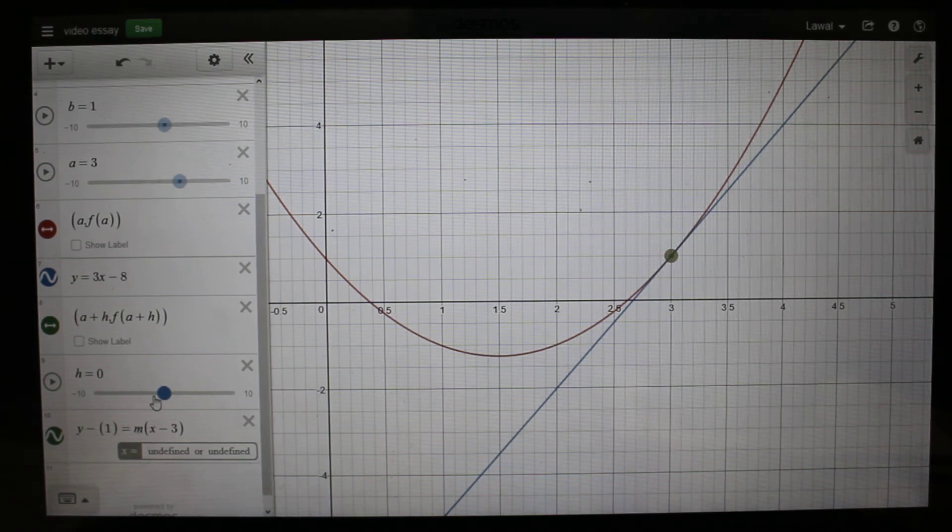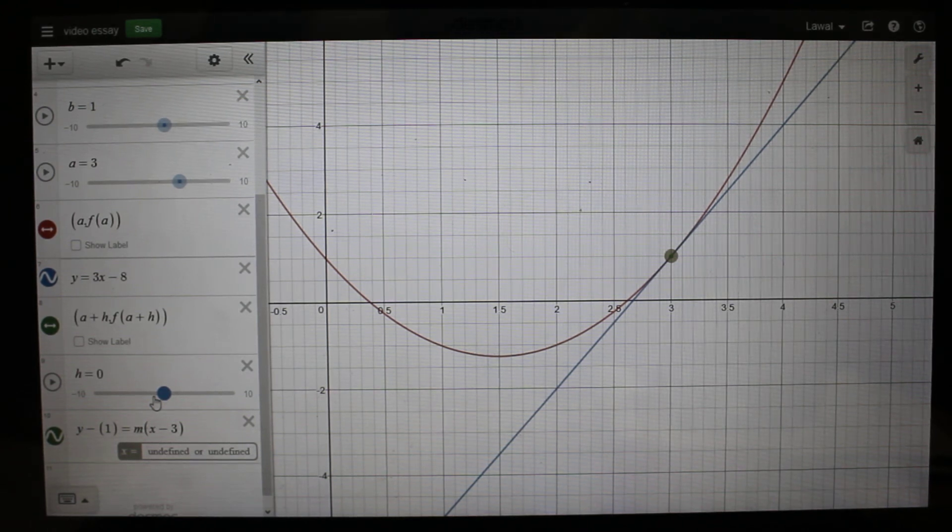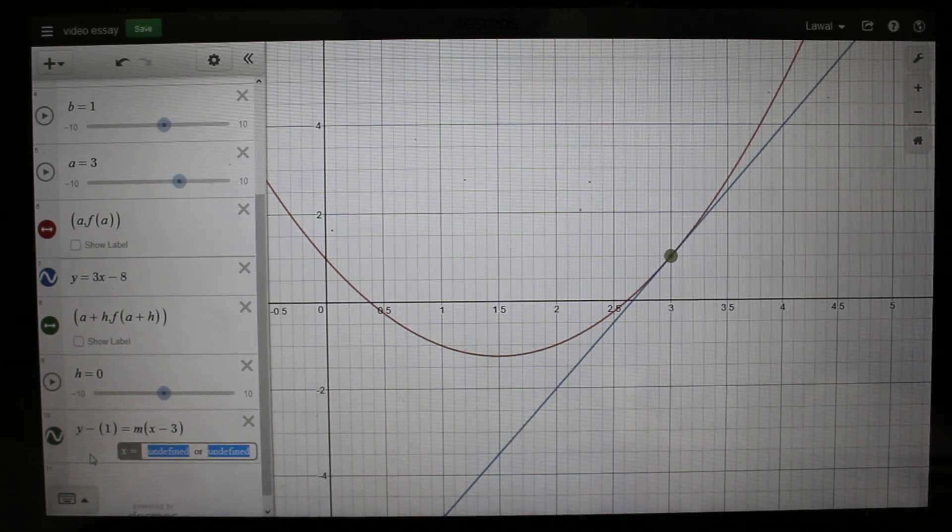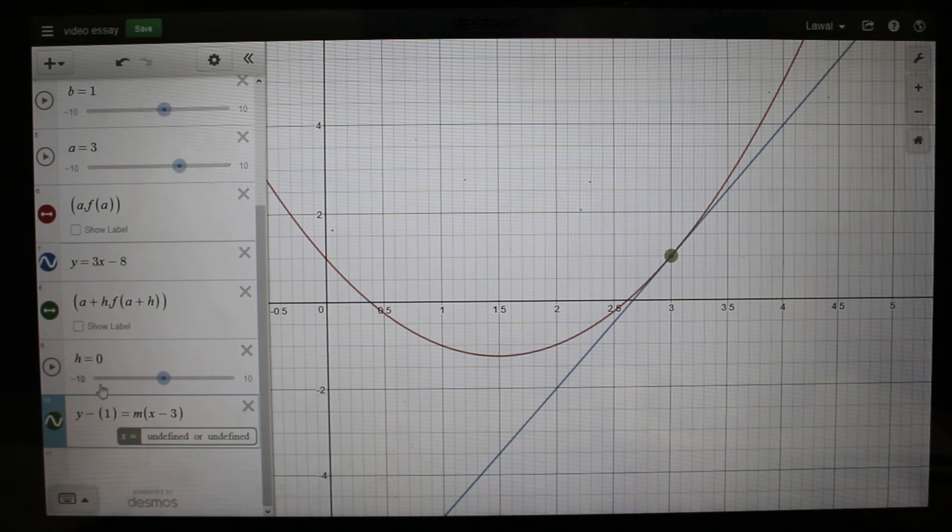Creating the same slope of tangent and the slope of secant. Now because of this, it shows that the slope is undefined. This shows that as the slope at the secant line tends to move towards zero, the slope of the secant tends to become undefined.